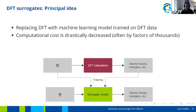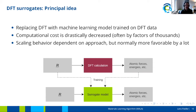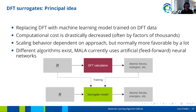The computational cost is drastically decreased and the scaling behavior is generally much more favorable than DFT, although it depends on the specific approach. There are different algorithms to realize such a surrogate model. MALA currently uses artificial feed-forward neural networks, but in theory other machine learning techniques could be employed as well.